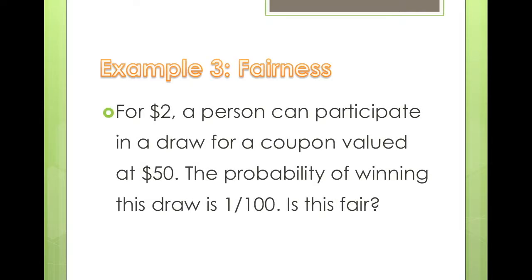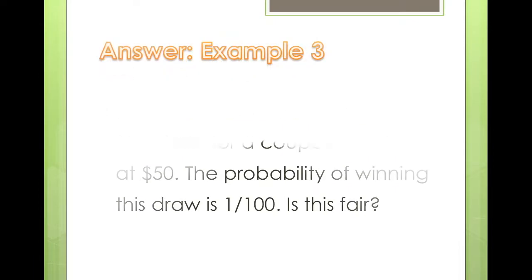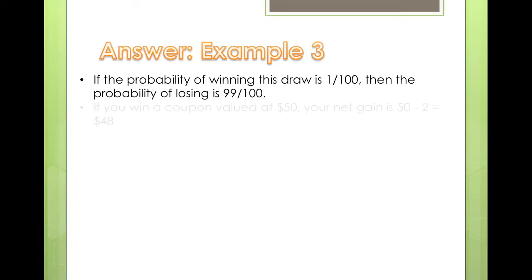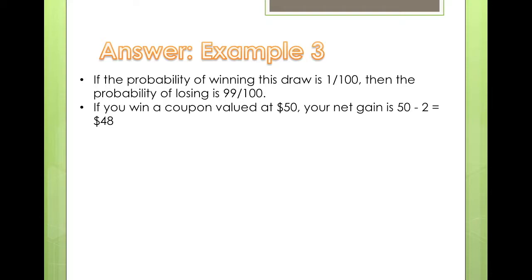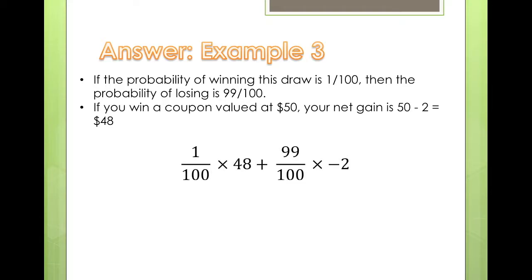For $2, a person can participate in a draw for a coupon valued at $50. The probability of winning is 1/100, so the probability of losing is 99/100. If you win, your net gain is $50 − $2 = $48. The expected gain calculation gives negative $1.50, so this game is unfair because the expected gain is negative.